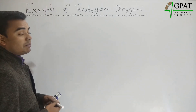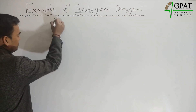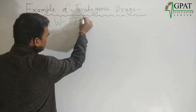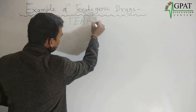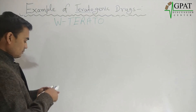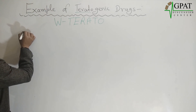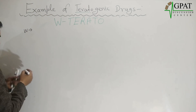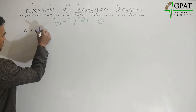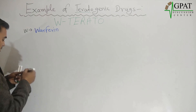So how will you remember this? I have made the mnemonic from here: W TERATO. So W means — the example of W is warfarin. Warfarin is a teratogenic drug.